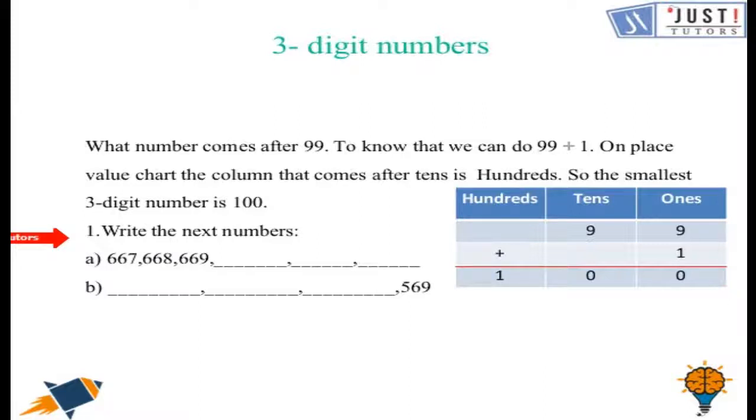So now we can try these questions. Let us try it together. So can you tell me which number comes after 669? Have a look at the sequence. So the sequence goes as 667, 668, 669. So the next number must be 670, then 671 and then 672. This is how your sequence is completed.